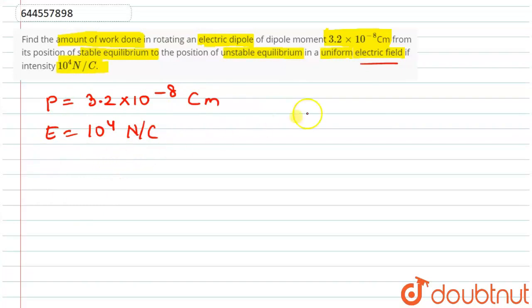These are the two data. We are going to change it from stable equilibrium to unstable equilibrium.